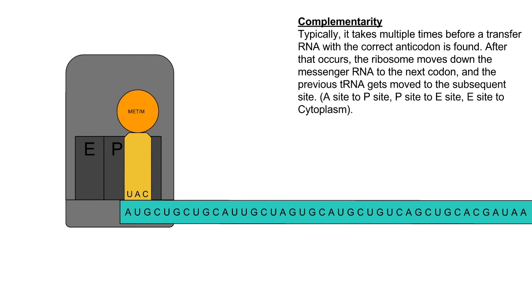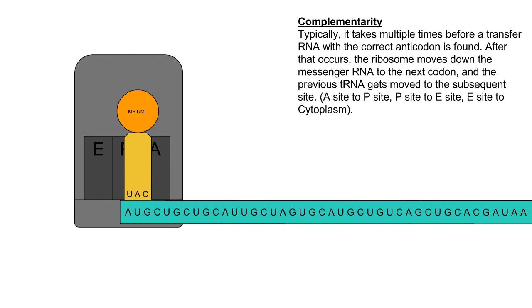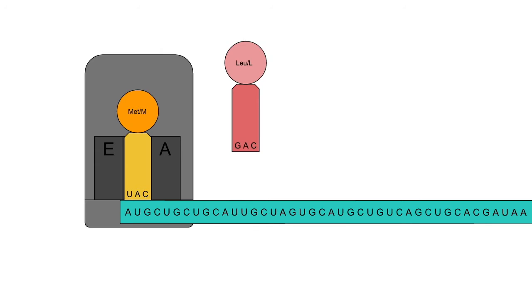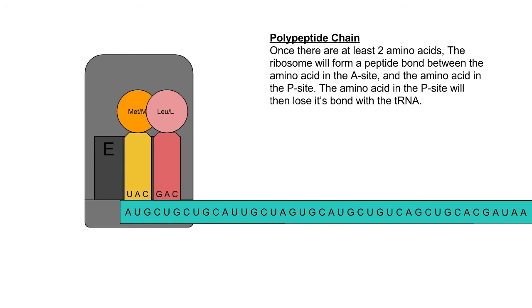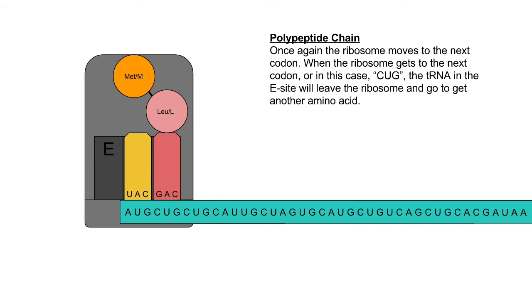It normally takes several attempts until a tRNA with a complementary anticodon to the current codon is found. When the correct tRNA is found, the ribosome moves down the RNA to the next codon. All the tRNA in the ribosome then gets moved to the subsequent site: the tRNA in the A site goes to the P site, the P site goes to the E site, and the E site goes to the cytoplasm. When there are at least two amino acids present in the ribosome, the ribosome will form a peptide bond between the amino acid in the P site and the amino acid in the A site. The amino acid in the P site will lose its bond with the tRNA in the P site.